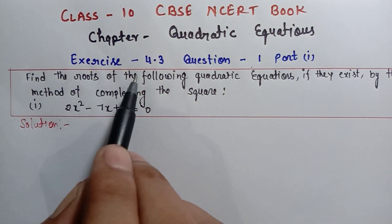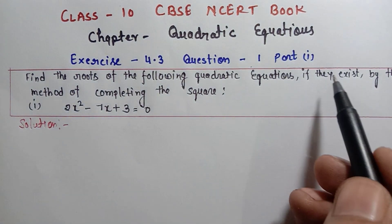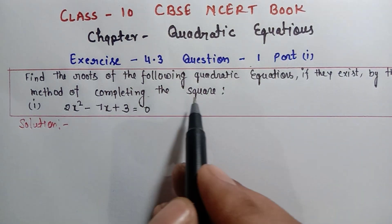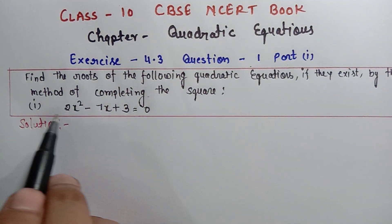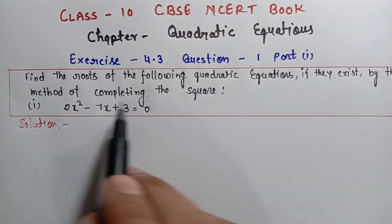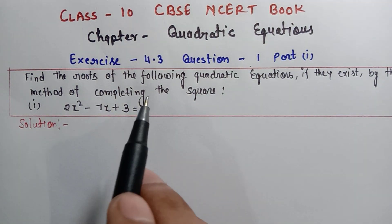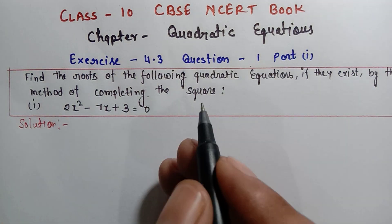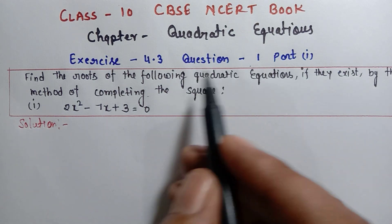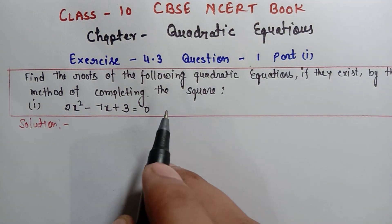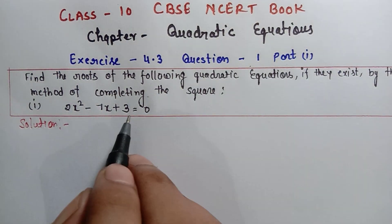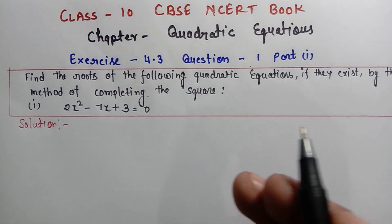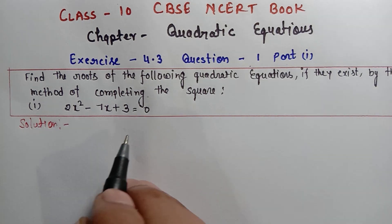The question is: find the roots of the following quadratic equations, if they exist, by the method of completing the square. इस quadratic equation को completing the square method से solve करना है। इस वीडियो को देखने से पहले Exercise 4.3 का introduction part अच्छे से देख लीजिए, जो मैंने previous वीडियो में बताया हुआ है।